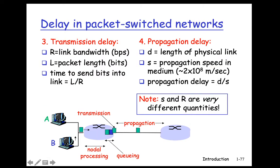The amount of wait depends on the congestion level of the router. Component 3 is the transmission delay, and it's calculated this way: R being the link bandwidth, L being the packet length. The time to transmit the packet out will be L divided by R. It's happening right here at the interface between the router and the link.